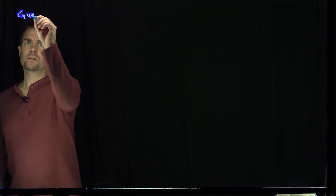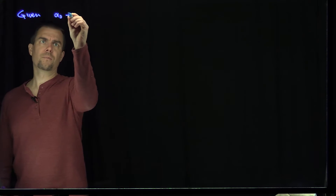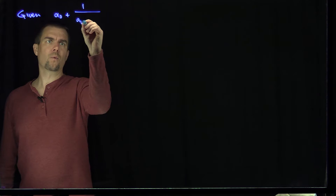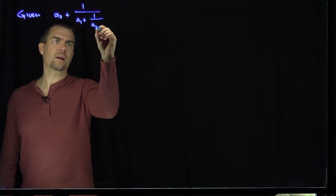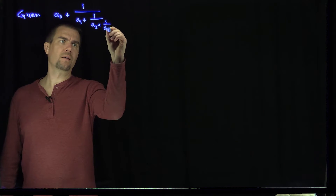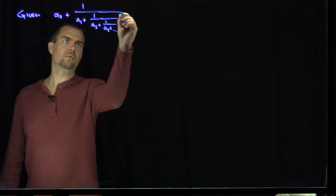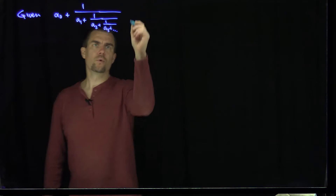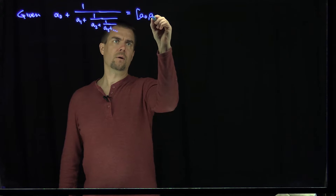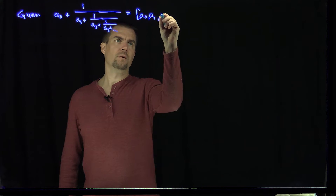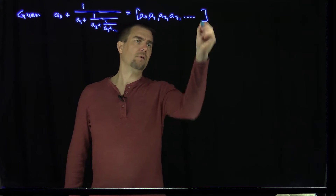If we're given the continued fraction a0 plus 1 over a1 plus 1 over a2 plus 1 over a3, and so on, we write this in our notation as [a0, a1, a2, a3, ...] and so on forever.